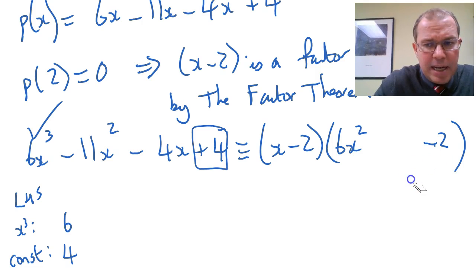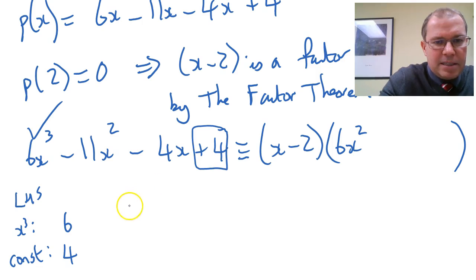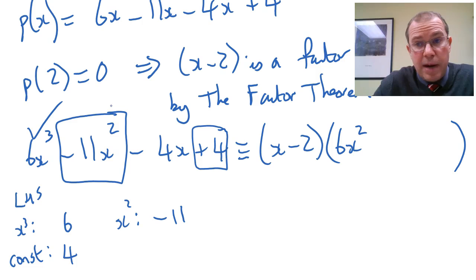So I know the first term is 6x squared, and I know the constant term is negative 2. I'm going to erase the negative 2 because that's going to be my check that I've got everything correct at the end. But remember we know that the last term is negative 2. Now let's compare on the left-hand side, let's do the x squared terms. I've got minus 11x squared terms, so the coefficient of x squared is minus 11.